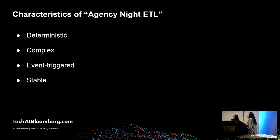Stability plays a huge part in the whole process. Normally the agencies publish data in Eastern time — maybe 4 p.m. or 8 p.m. — and our Asian and European markets, as well as U.S. customers, want to see the data the next day. We cannot afford any services going down during those two very important agency update nights, and we're talking about a couple dozen microservices and scripts we need to call.